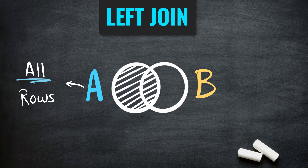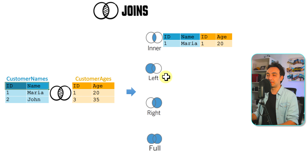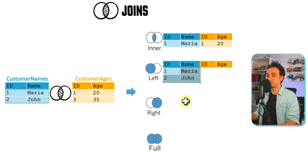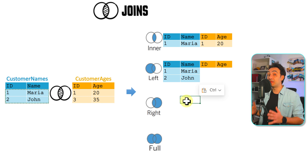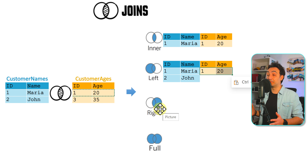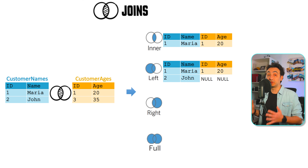Left join gives us everything from the left table without checking anything, but from the right table we only get the matching rows. So we'll have both customers from the left table in the output. For customer ID 1, we find a match on the right side and include it. For customer ID 2, there's no match on the right, so those fields will be empty — meaning nulls.